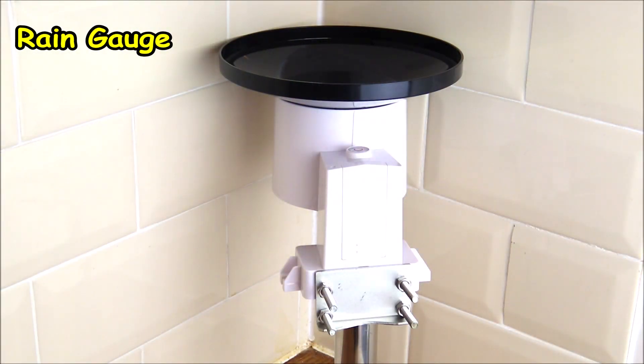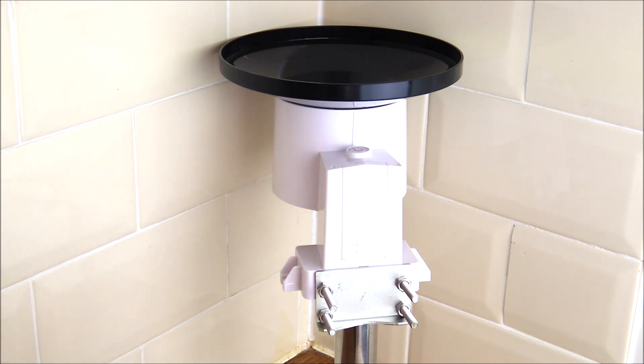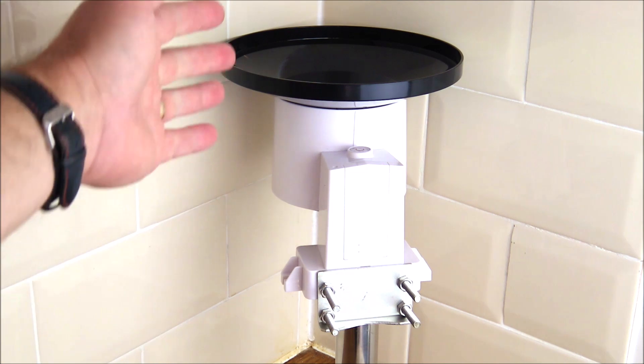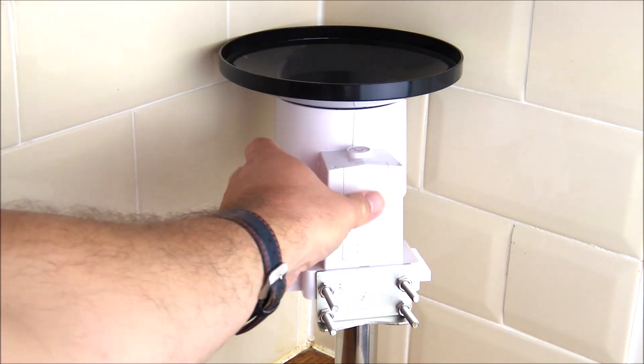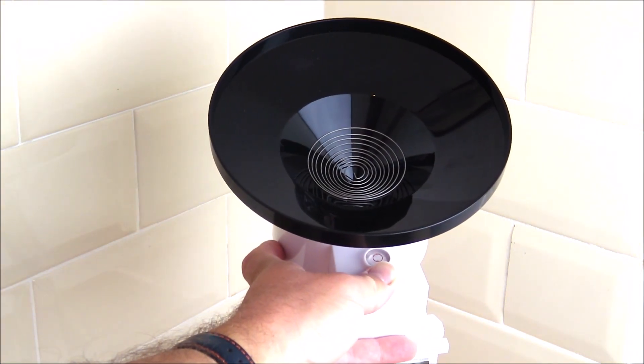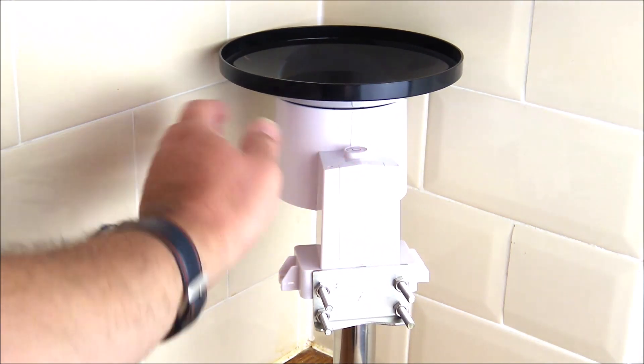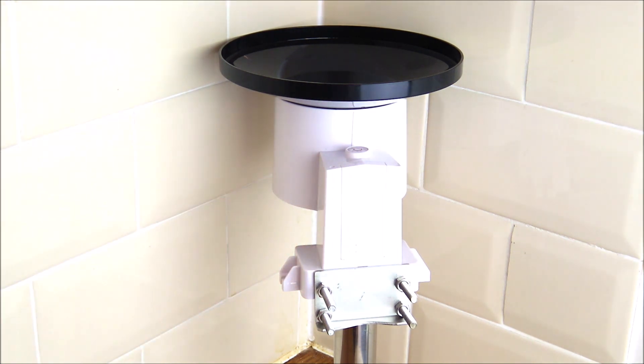This is the rain gauge and it essentially comes in four main parts. There's the metal mounting pole with the associated brackets, the actual funnel itself, the debris screen that filters out leaves and insects, and the main rain gauge unit with a tipping bucket mechanism inside.